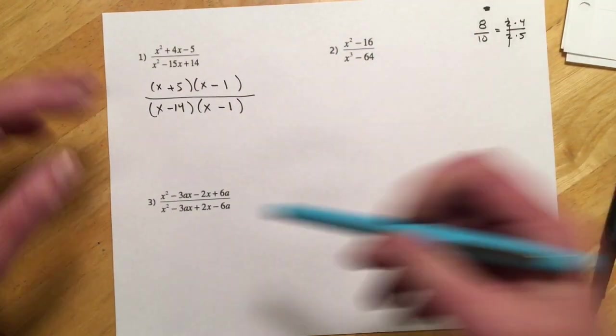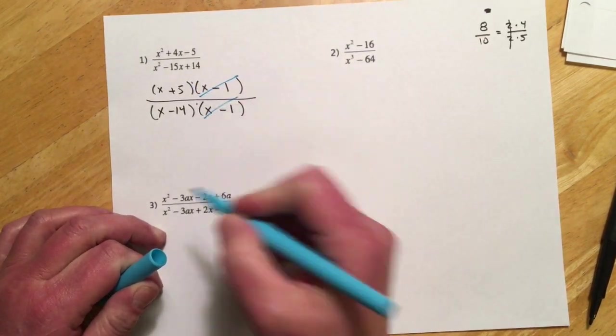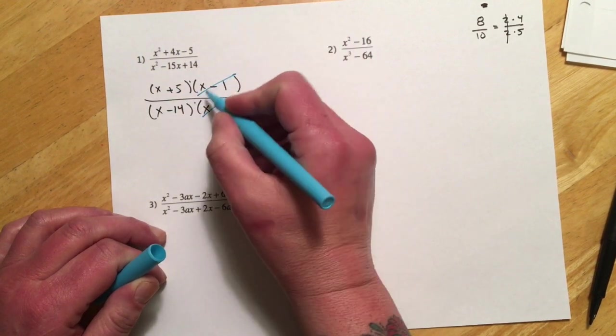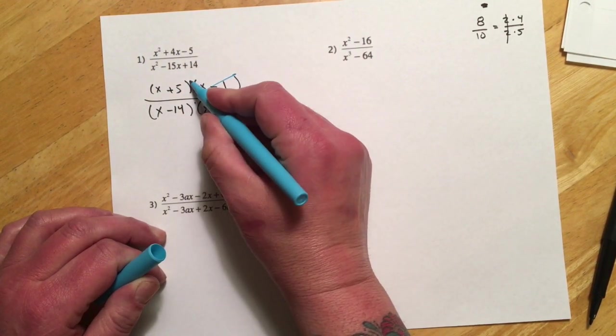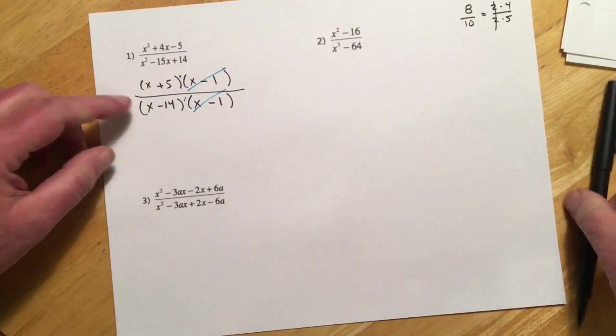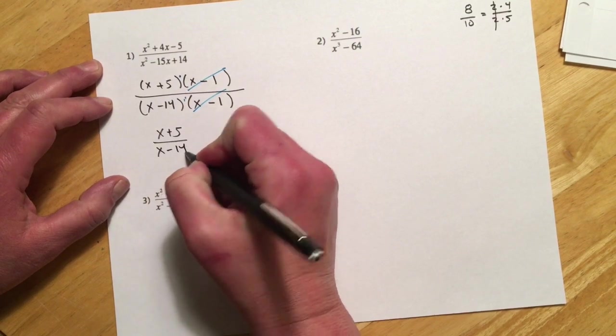And then once we've got that, we can cancel the x minus ones, because they're multiplying. And we can't cancel across additions. So careful not to cancel like these x's. But as long as two things are multiplying, then you can cancel them. And so then what would be left is this right here. And that would be your answer.